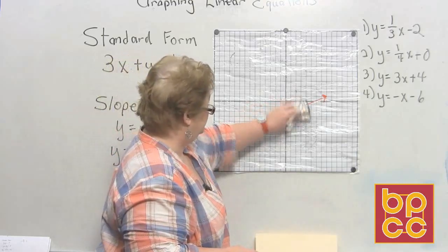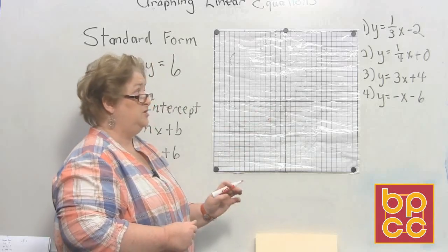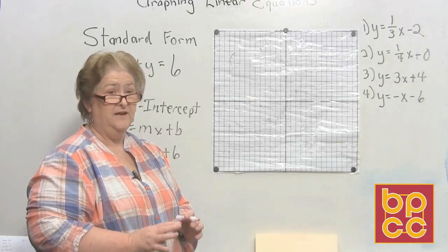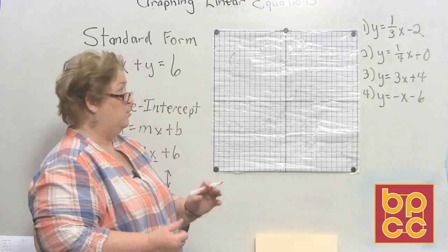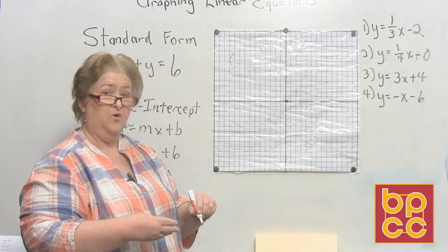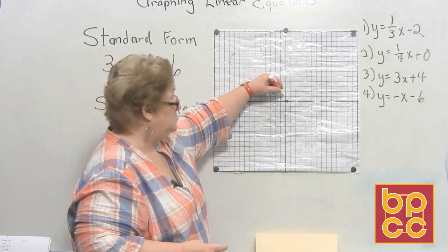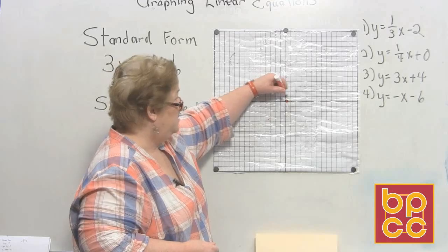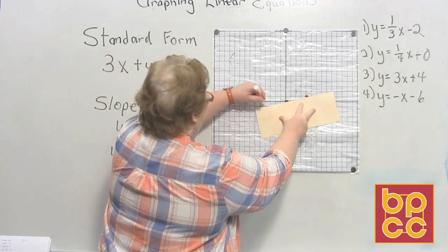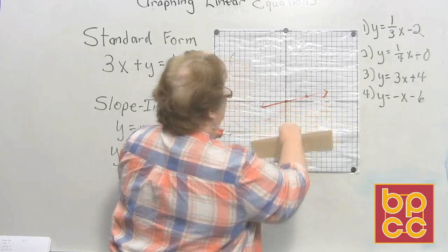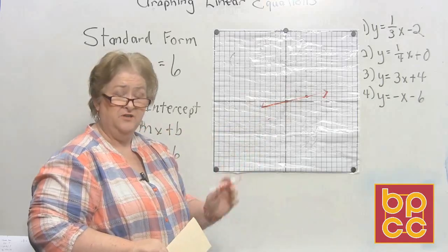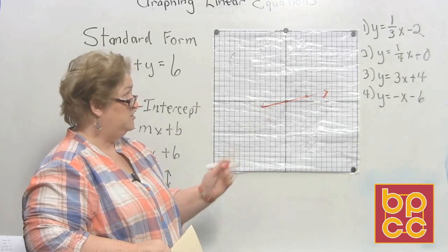Now let's try our next one. This time we're going to go to zero. A lot of times in literature they won't put the zero, so if you don't see that number at the end, it is assumed to be zero. We're going to put a point at zero on the y-intercept. From there, we're going to rise one — because it's positive — and go to the right four: up 1, to the right 1, 2, 3, 4. I'll draw this line with arrows at both ends, because anything on this line to infinity both ways is going to be an answer for this equation. So there's y = 1/4x + 0.